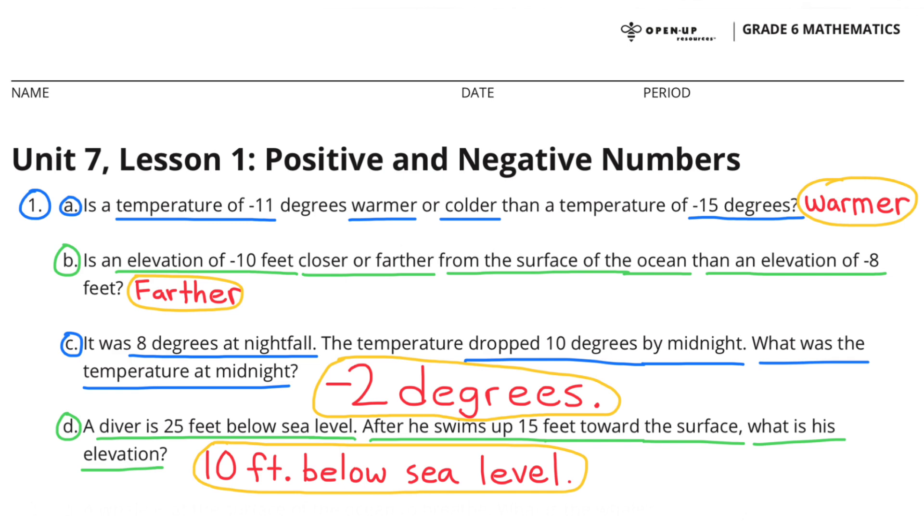D. A diver is 25 feet below sea level. After he swims up 15 feet towards the surface, what is his elevation? 25 feet below sea level would be like negative 25. And then he swims up 15 feet, that would be like plus 15. So negative 25 plus 15 would be 10 feet below sea level or negative 10.